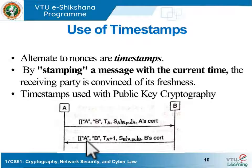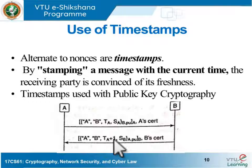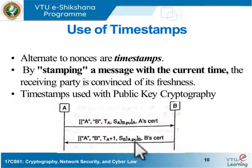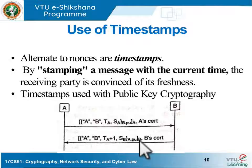B generates a response containing A's identity, the timestamp incremented by 1, and a random number SB used to compute the session key. This entire information is signed using A's public key, and then additionally signed using B's private key. B also sends its own certificate so that A is able to retrieve the relevant information.